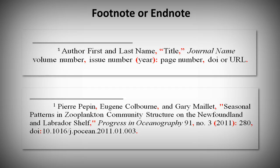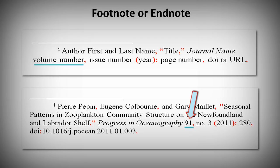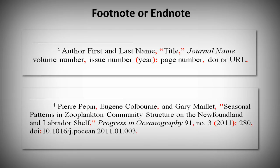To cite an online journal article in a note, start with the author's first name and last name. Next, within quotation marks, enter the title of the article, followed by a comma. Then the name of the journal in italics. Enter the volume number, then a comma. Notice you only enter the number — don't write 'volume' or 'VOL.' Then enter the issue number. Here you do use the abbreviation NO to indicate the issue number. Next, in brackets, enter the year of publication, followed by a colon.